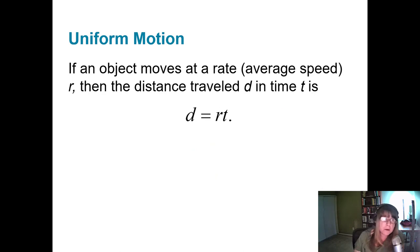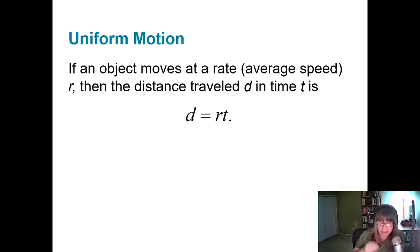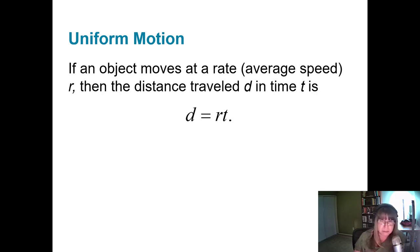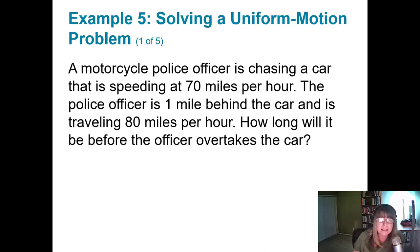You've probably seen this formula before: an object moves at an average speed R, then the distance traveled is D in time T — in other words, distance equals rate times time. Keep in mind this is uniform motion: not speeding up, not slowing down, just an average rate of speed. Some students like to call this DIRT, but D equals RT. Let's take on a problem.